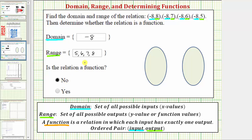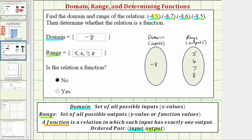To make it even more obvious the relation is not a function, let's show the relation using a mapping, where this set will be the domain or set of all possible inputs, and this set will be the range or the set of all possible outputs. So in this set we know we'll have negative eight, and in this set we'll have five, six, seven, and eight. For each input we'll draw an arrow to the corresponding output. So for this first ordered pair we have negative eight comma eight, which means when the input is negative eight the output is eight. To show this relation we draw an arrow from negative eight in the domain to eight in the range.